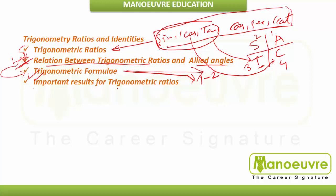There are important standard ratios at 30, 45, 60, 90 degrees, plus some additional important results like sin 7°, sin 22.5° that you should remember. We provide detailed analysis on all topics — the type of questions asked in each section, tricks, and shortcuts — so you have a well-directed approach to prepare for your exam.